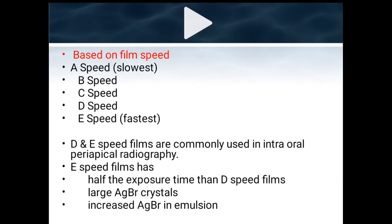Based on film speed, we have A to E — A is the slowest and E is the fastest. D and E speed films are commonly used in intraoral periapical radiography. E speed films have half the exposure time of D speed films due to larger silver bromide crystals and increased silver bromide in the emulsion.